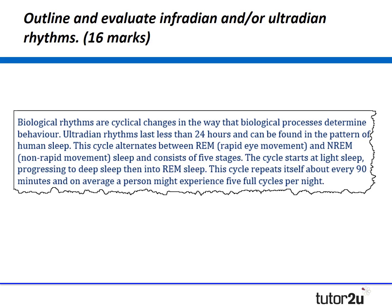You might say that biological rhythms are cyclical changes in the way that biological processes determine our behaviour. Ultradian rhythms last less than 24 hours and can be found in the pattern of human sleep. The cycle alternates between REM sleep and non-REM sleep and consists of five stages. The cycle starts at light sleep, progresses into deep sleep and then into REM sleep, and repeats itself about every 90 minutes. On average a person might experience five full cycles per night. That's 80 words — done nicely.